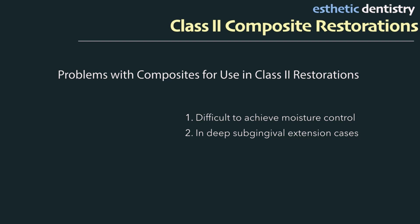The problems with composites for class II restorations: first, it is difficult — not impossible — to achieve moisture control, though using a rubber dam addresses that. In deep sub-gingival extension areas, adaptation of the matrix band and deep margin elevation are all difficult procedures.